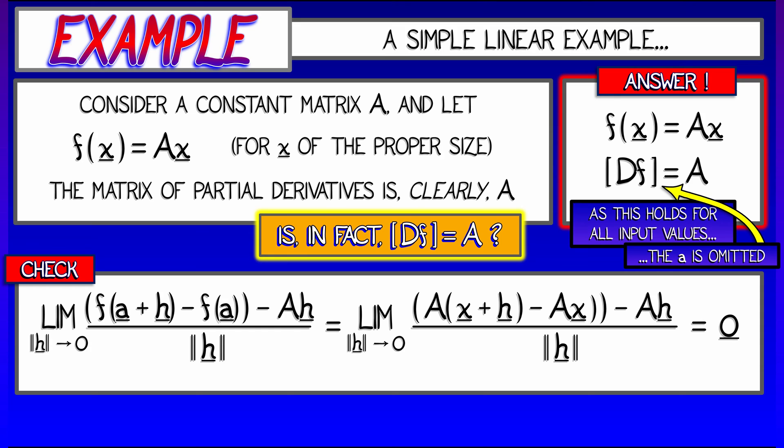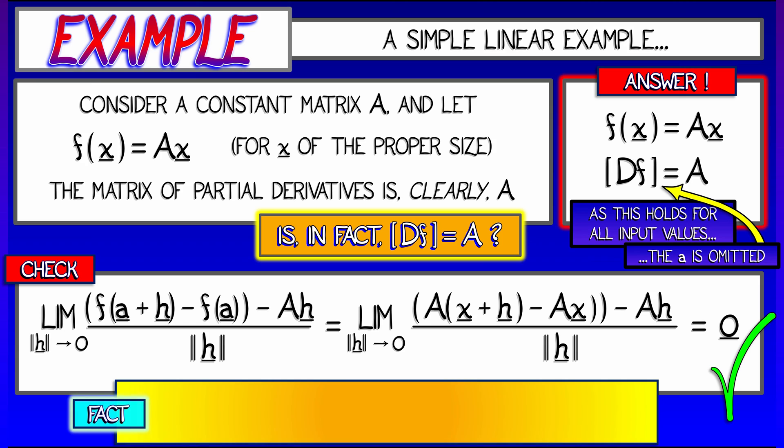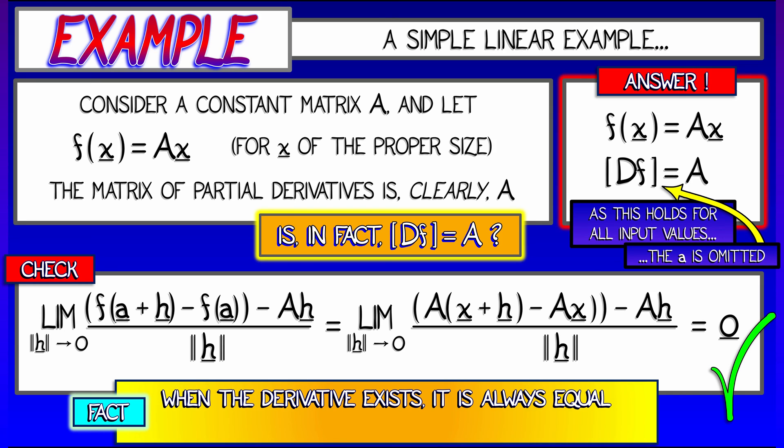So this one, in fact, works out very nicely. We can compute this derivative explicitly. In general, it is true that when the derivative exists, it is always equal to the matrix of partial derivatives. This is going to be so helpful to you. It's going to mean that you don't really have to worry about the definition as long as the derivative exists.